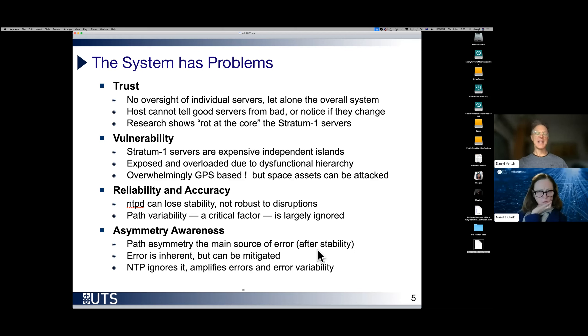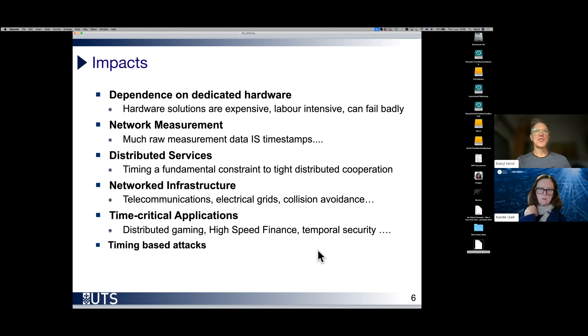And finally, asymmetry awareness. Asymmetry is whether the path from the client to the server or the reverse path are the same or not, in a certain sense. It's a major source of error. And that error is inherent, it's very difficult to remove, but it can be mitigated. Unfortunately, the existing system just ignores it, which means you're condemned to suffer all the worst consequences.